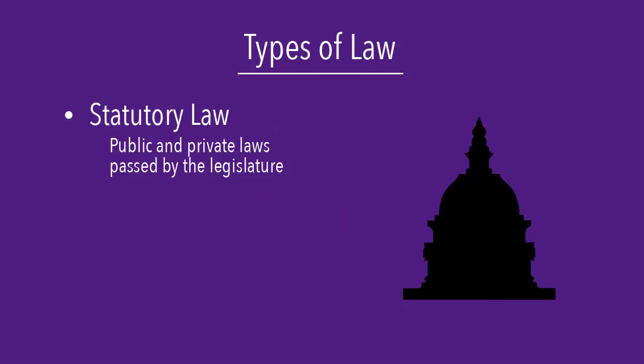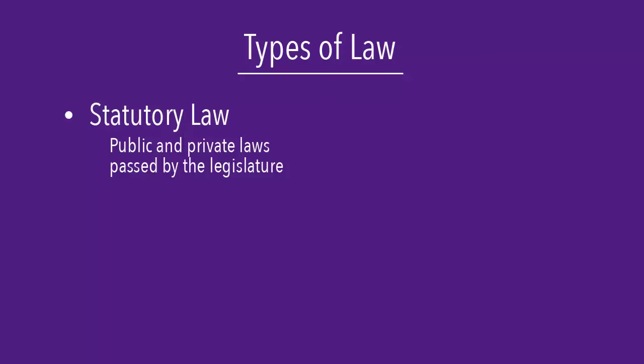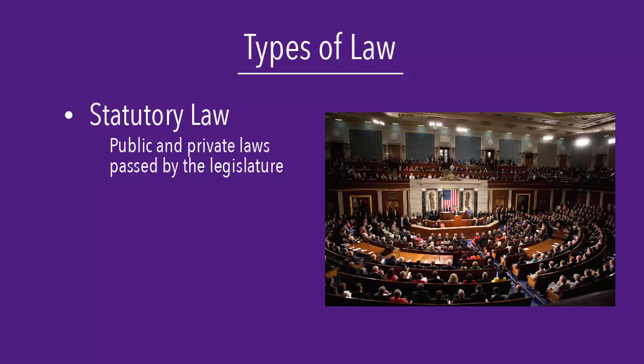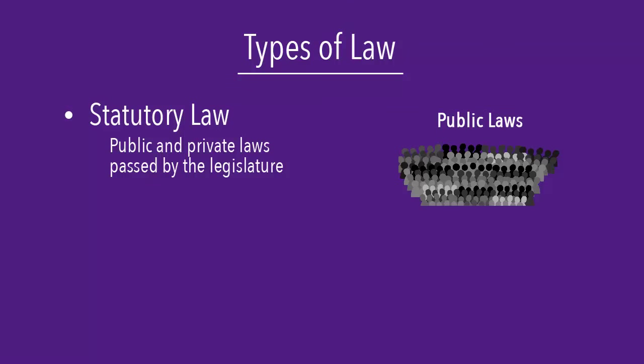Statutory law involves laws passed by the legislature. For the federal government, this would be the acts passed by the U.S. Congress. Statutory law involves both public and private laws. Public laws relate to the general public, and private laws relate to specific institutions or individuals. Most of the laws passed by Congress are public laws.